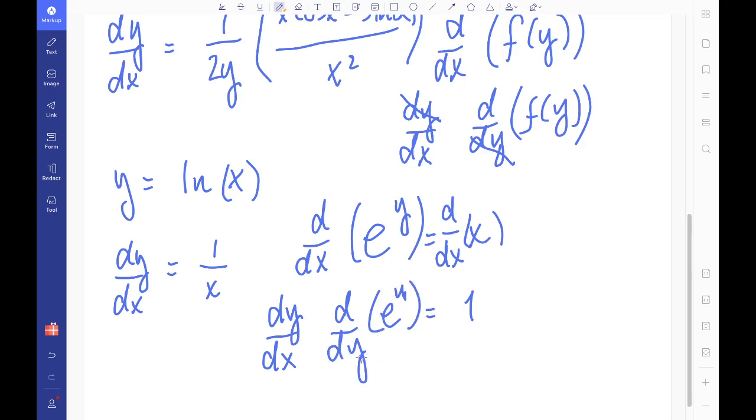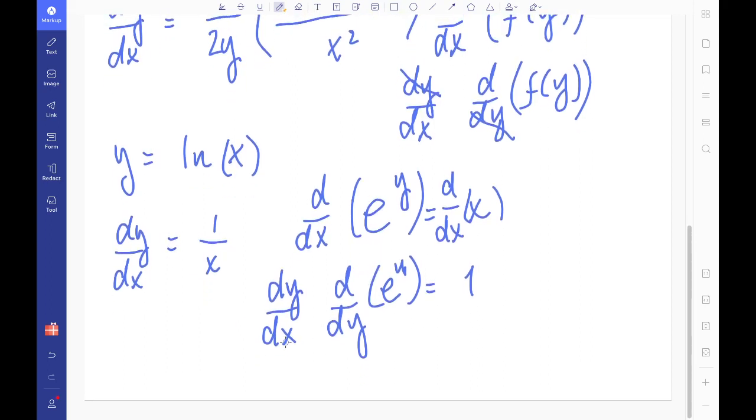OK, so you should know that the differential of e to the y is just e to the y. OK, so the function e to the x, if you differentiate that, is just e to the x. It's the one function that the value of y gives the gradient at each point. So if we then rearrange this to give dy dx equals 1 over e to the y. OK, because this part is just e to the y.